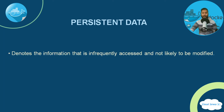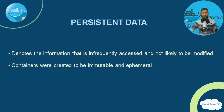Persistent data denotes information that is quite infrequently accessed and not likely to be modified. For example, if you have some data that is going to remain static throughout your entire procedure of using that service, that is likely to be denoted as persistent data.